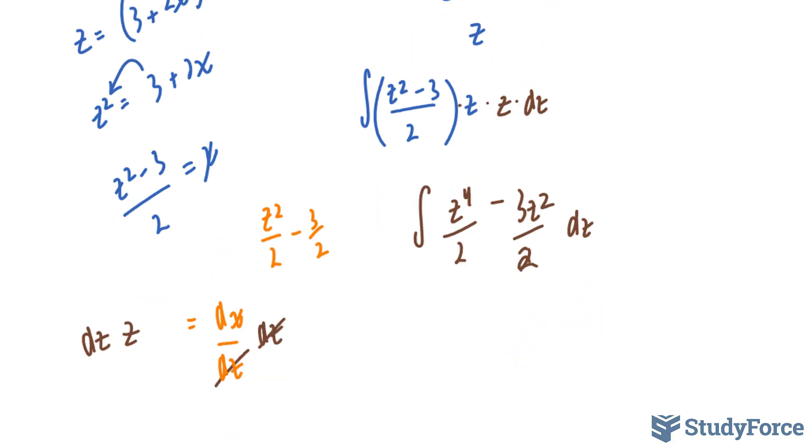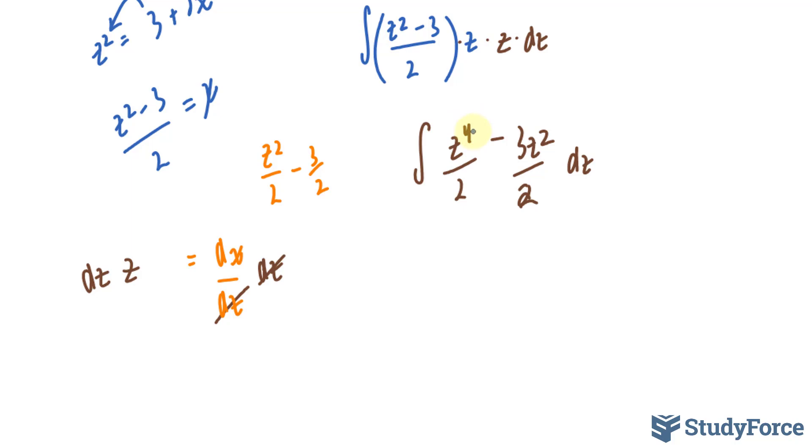Taking the integral of these two terms isn't hard at all. We'll add 1 to this 4 and 1 to this 2. And then we'll take whatever the sum is, which is 5, and multiply it by this 2. The sum of this is 3.